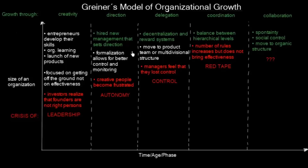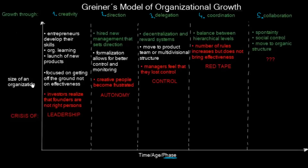The whole model can be nicely summarized in one simple graph. On our horizontal axis we have simply time, age, or a phase within which companies develop. As you can see we are going to have five phases. On the vertical axis we have size of an organization — how big this organization is. In the very beginning you are starting at absolute zero, no size and no time has passed.